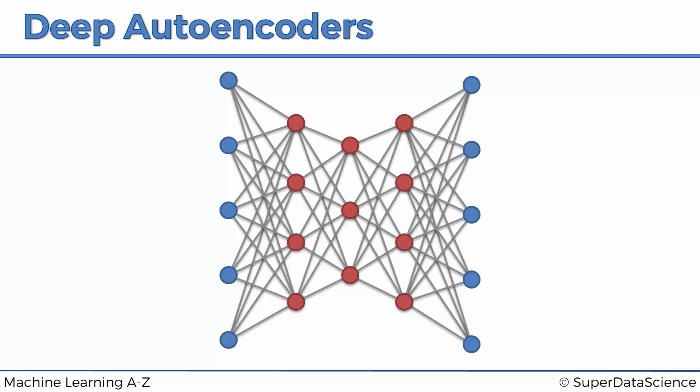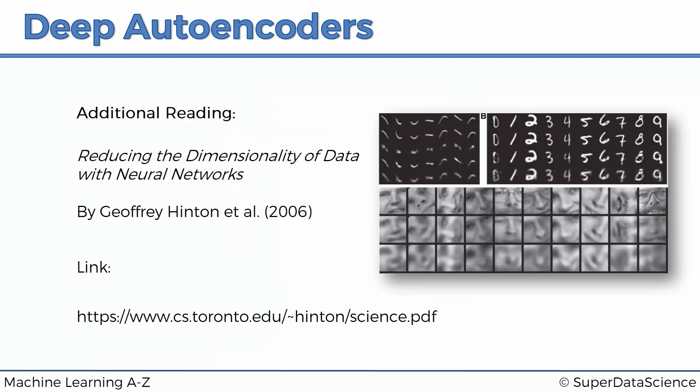And if you'd like to learn more about deep autoencoders, a great paper by Geoffrey Hinton and others called Reducing the Dimensionality of Data with Neural Networks. So check it out if you'd like to learn more about deep autoencoders. And remember that they're based on RBMs.